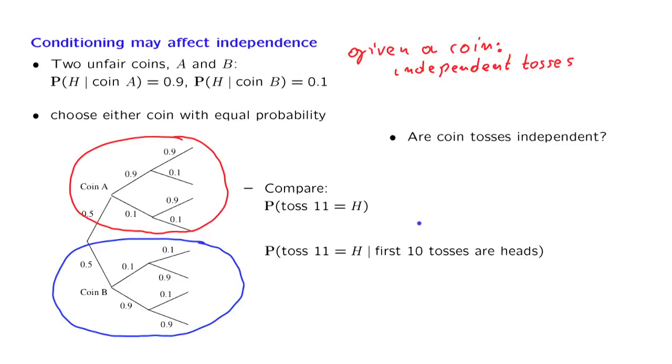Let us calculate these probabilities. For this one, we use the total probability theorem. There's a certain probability that we have coin A, and then we have the probability of heads in the 11th toss, given that it was coin A.